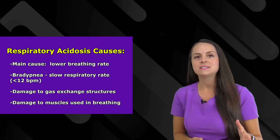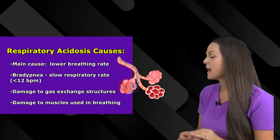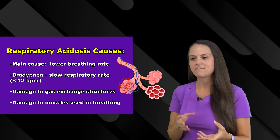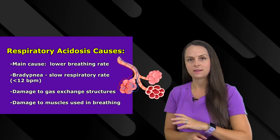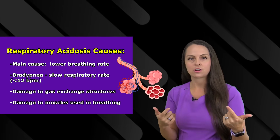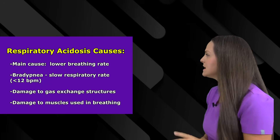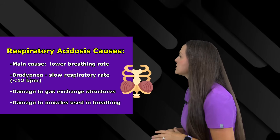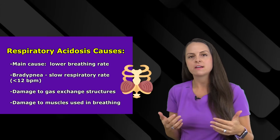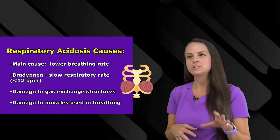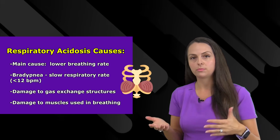Also, if we have damage to those gas exchange structures in our lungs, like those alveolar sacs, where we're not having that proper exchange of oxygen and carbon dioxide, we can retain too much carbon dioxide and drop our blood pH. In addition, if we have an issue with the muscles that aid in the respiratory rate — for instance, our diaphragm is too weak — we start getting into those neuromuscular disorders that will affect our ability to breathe.